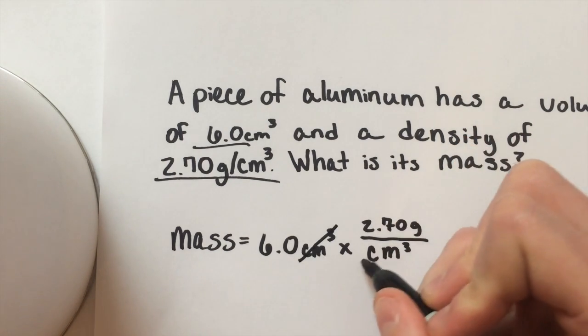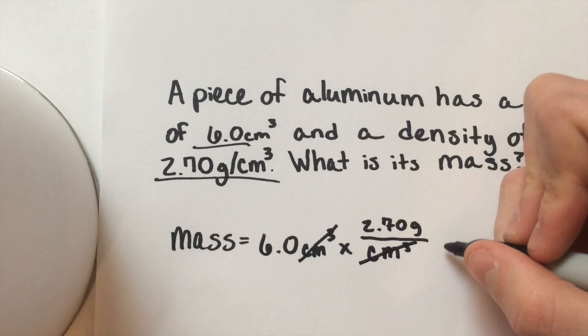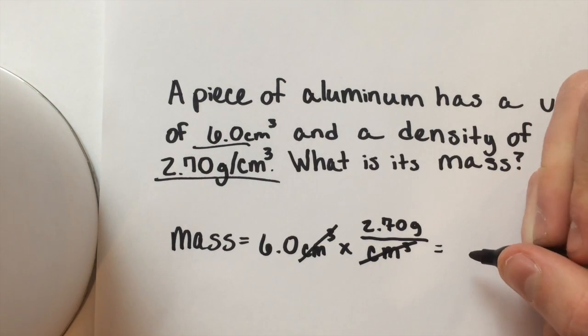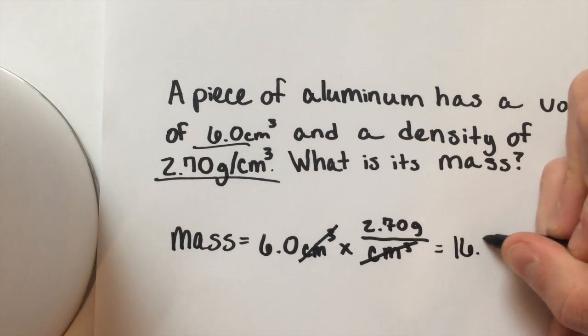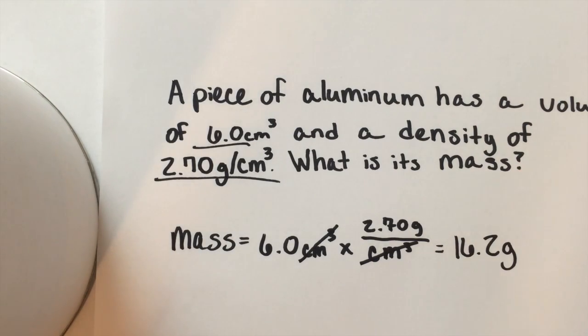Your cubic centimeters are going to cancel. And you are just left with the multiplication and the grams, which will give you 16.2 grams for your mass.